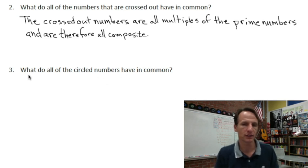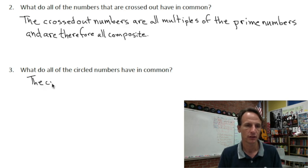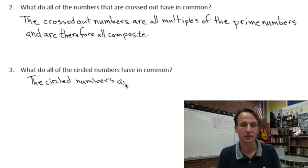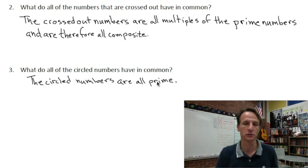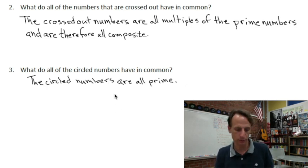Remember, you're crossing out those multiples because they are composite. All right. So what do all the circled numbers then have in common? The circled numbers, well this one is just going to be kind of simple, right? The circled numbers, why did we circle them? They're all prime, right? Are all prime. I don't know what else we could really say about that. We could define prime and say that they only have one and themselves as factors, but that's the definition of prime, so it's adequate to say they are all prime. That's what they have in common. All right, that's two and three.